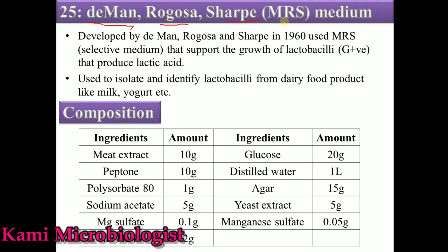We also call it MRS medium. This media was first discovered by three scientists named de Man, Rogosa, and Sharp in 1960. Actually, for lactobacillus they mostly used tomato and some other products for lactobacilli growth, but after that they replaced those products by using a media which we call MRS media, that is actually a selective medium.